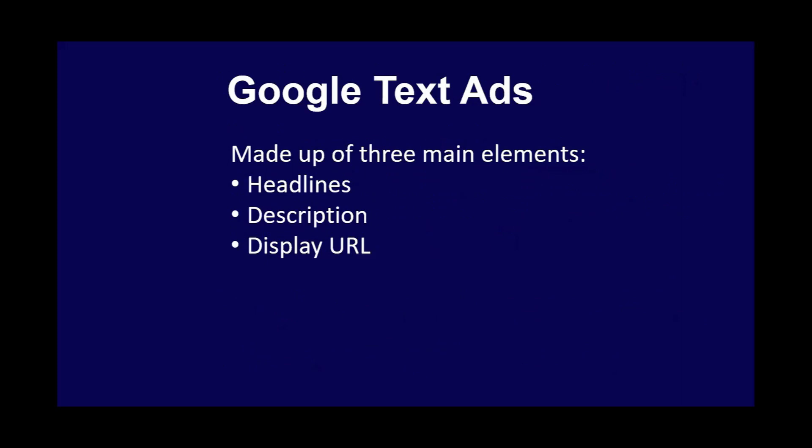When you think about a text ad, you have to think of three main elements: a headline, a description, and a display URL. The headline is your attention grabber — something that makes you stop scrolling. The description gives more detail about what you're trying to sell and how you can solve a problem. The display URL is where you go once you click on the ad.